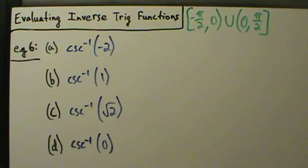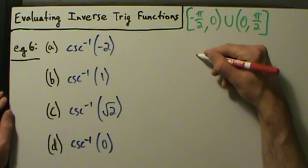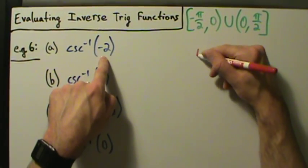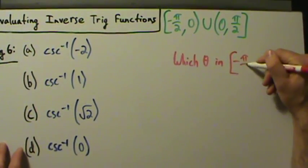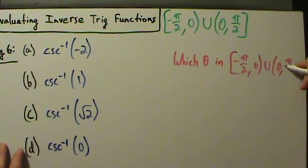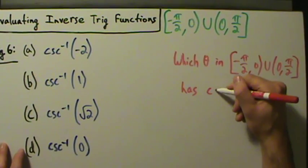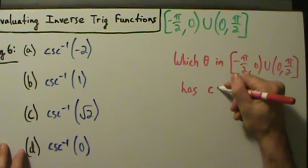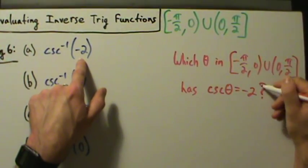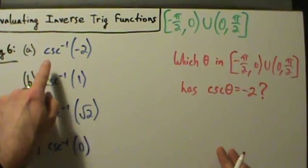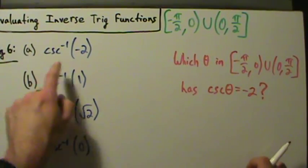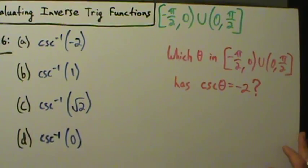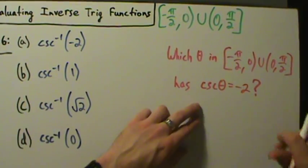We're going to proceed just like before. Since this is inverse cosecant, we'll do it similar to how we did inverse secant in the previous video. For part A, we want the inverse cosecant of negative 2. We ask: which theta in the range of the inverse cosecant function has cosecant of theta equal to negative 2? Remember what we did with the secant function — we took reciprocals as a shortcut.